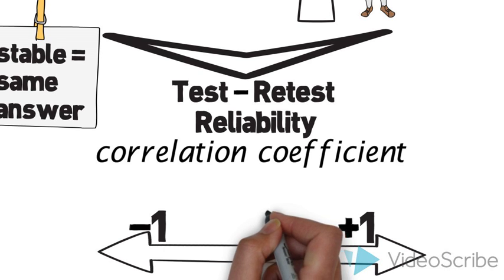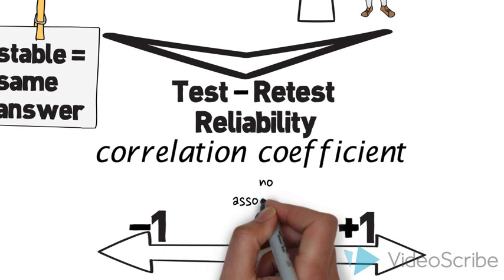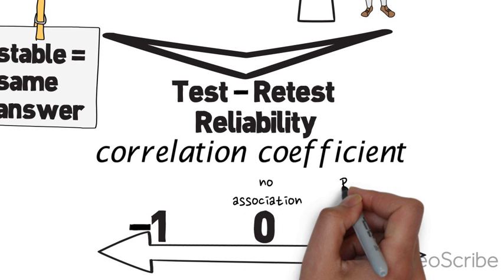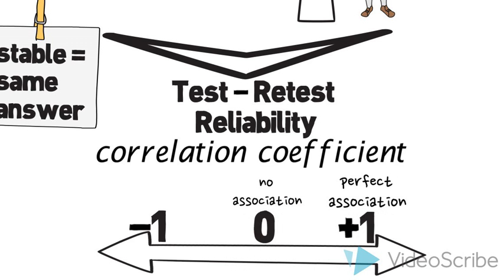Remember that correlation coefficients range from negative 1 to positive 1 with a value of 0 representing no association, the value of 1 representing a perfect association.